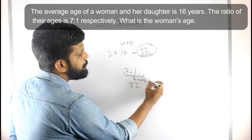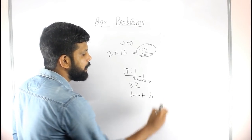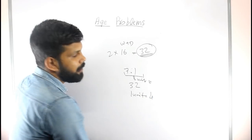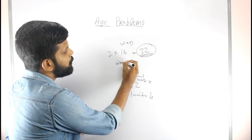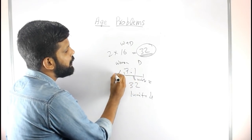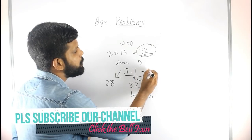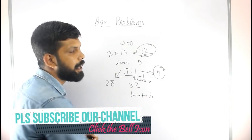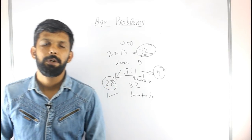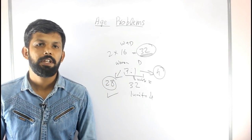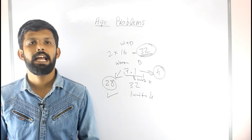Since 1 unit equals 4, the woman's age is 7 into 4, which is 28. The daughter's age is 1 into 4, which is 4. So the answer for this question is the woman's age is 28.